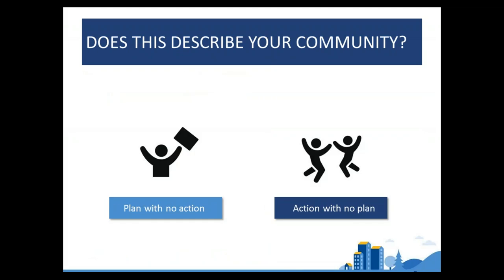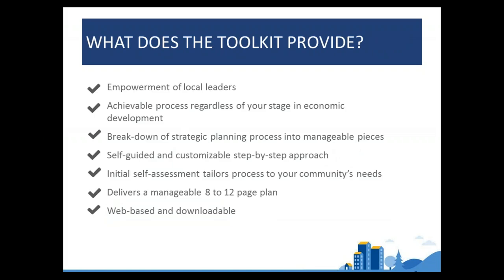Typically, communities are in one of two states: they have a plan but no real action, or they have lots of action but no plan. Many communities have hired a consultant, gone through a big process, and ended up with a two-inch-thick document that sits on a shelf and never gets used. In many cases it has 30 to 40 priorities and they just don't know where to start. Other communities are always in reaction mode, scrambling for funding opportunities and wondering why they're always chasing their tails.